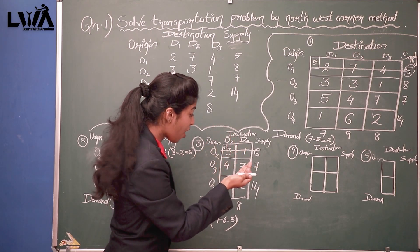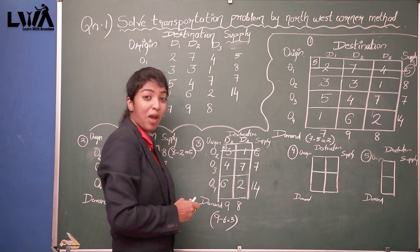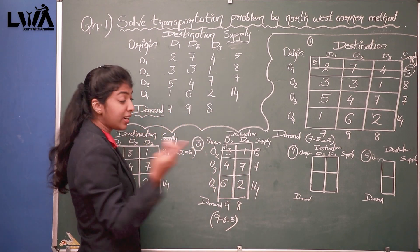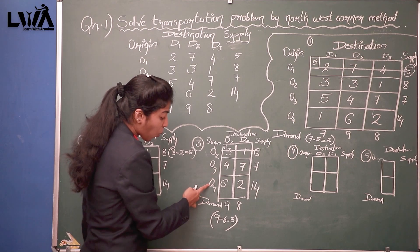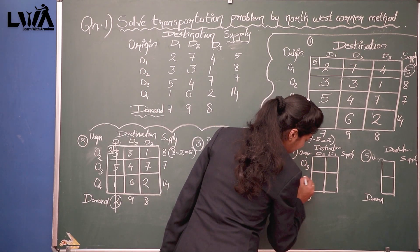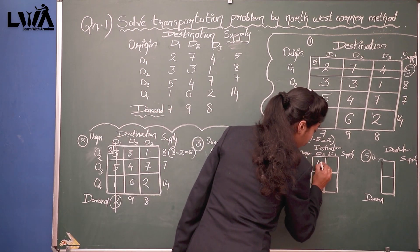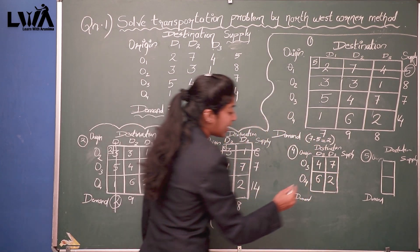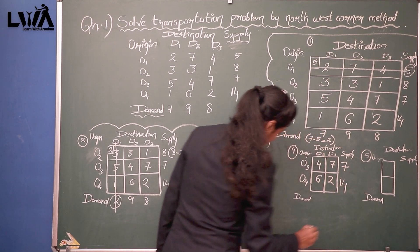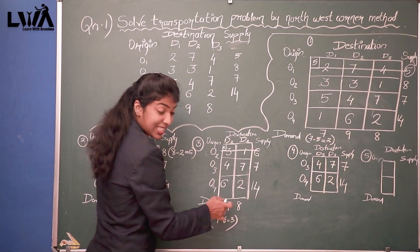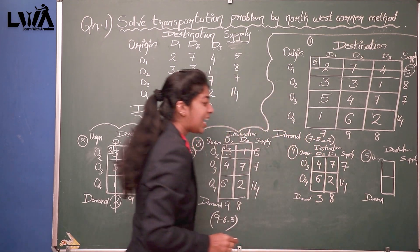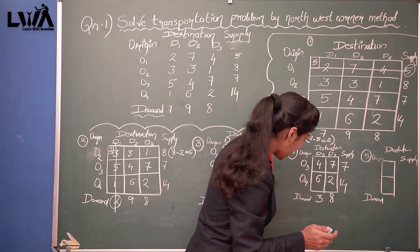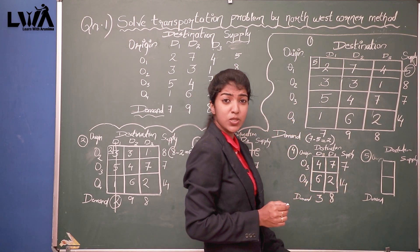We redraw the matrix — a 2×2 matrix is remaining. D2 and D3 are there; O2 has gone, so O3 and O4 remain: 4 7; 6 2. The remaining demand/supply values are 7 and 14; and not 9 now but 9 minus 6 equals 3. So 3 and 8.